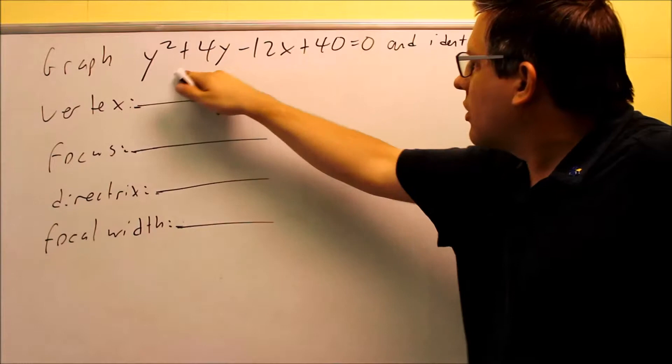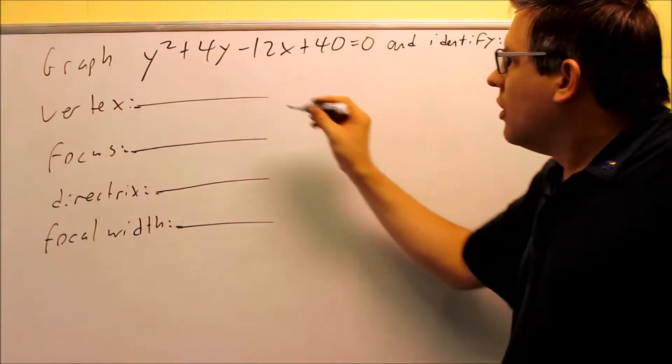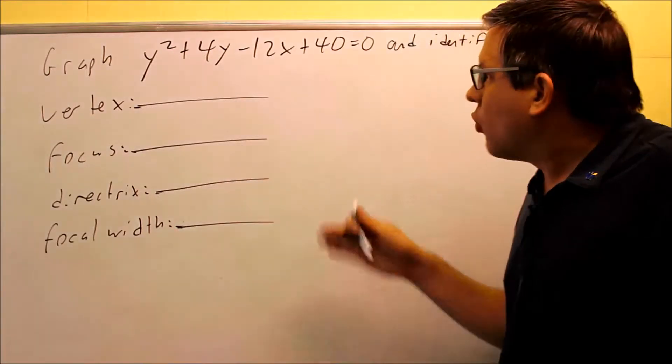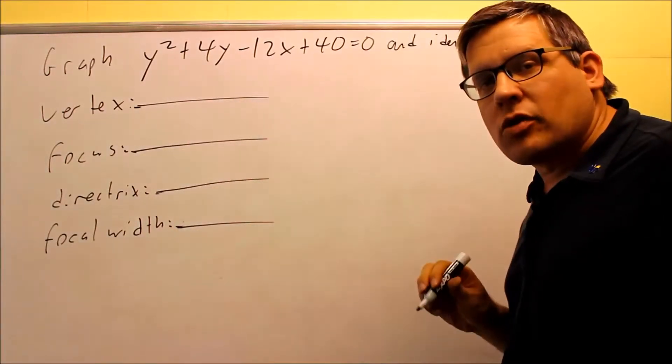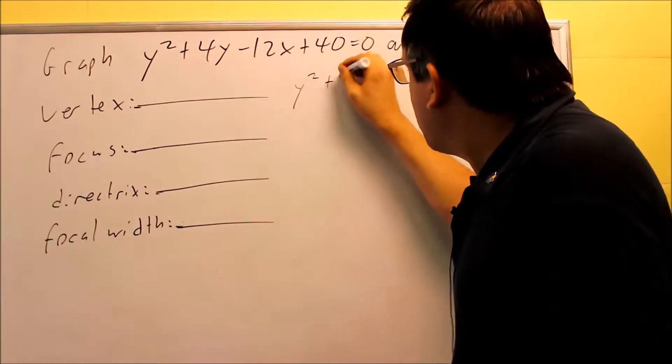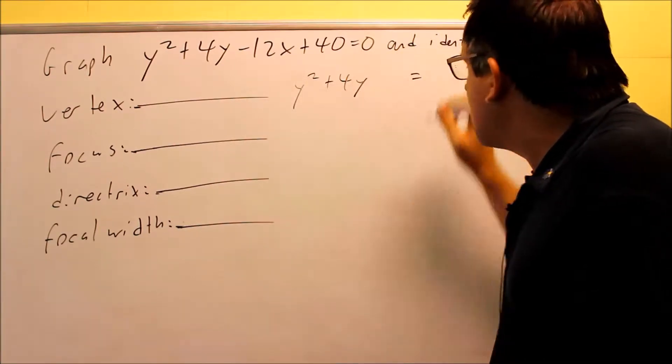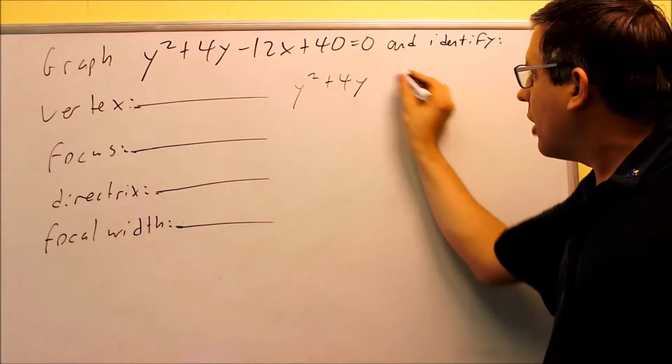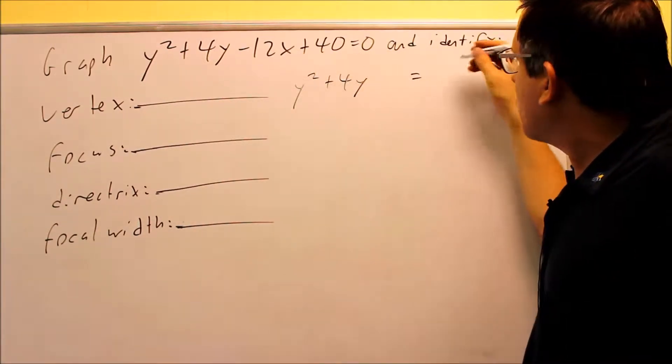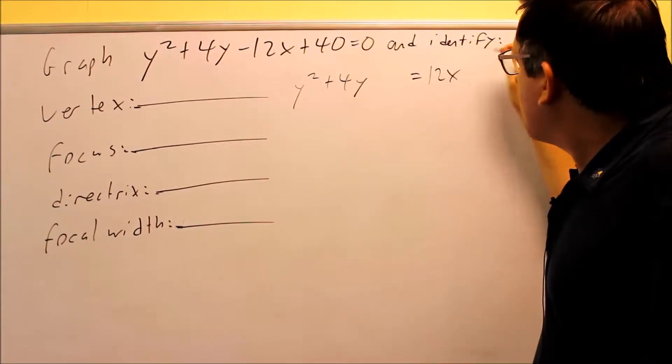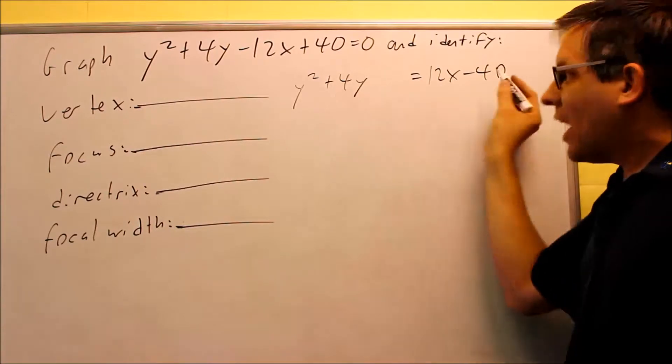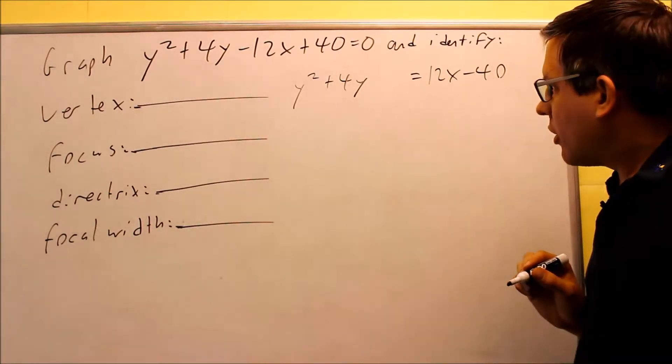So first of all, I need to set this up properly. So the variable that's squared, I'm going to keep that pair on one side of the equation. Everything else, I'm going to move to the other side of the equation. That's my first step on this one. So I'm going to do y squared plus 4y. I'm going to leave a space because eventually I'm going to complete the square and a number will be added there in that space. I'll add it to both sides. These two guys, I'm going to change the sign and that makes it positive 12x and negative 40. So now I have everything all set up correctly.